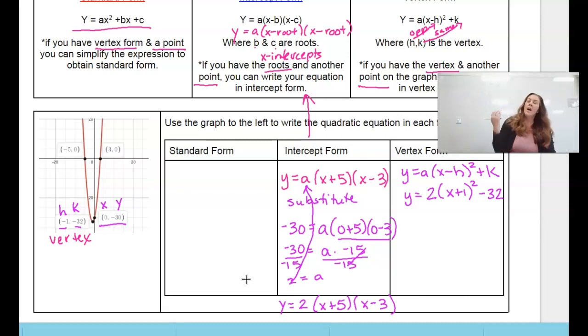All right. So standard form. Honestly, if we have all of this written, we can use that to simplify. So we have two different versions. I'll show you the version using work that we already have. So if I have y equals 2, x plus 5, x minus 3, then we can go ahead and simplify. We're going to leave the two alone, and we're going to multiply FOIL like we did in unit 1 and 2.